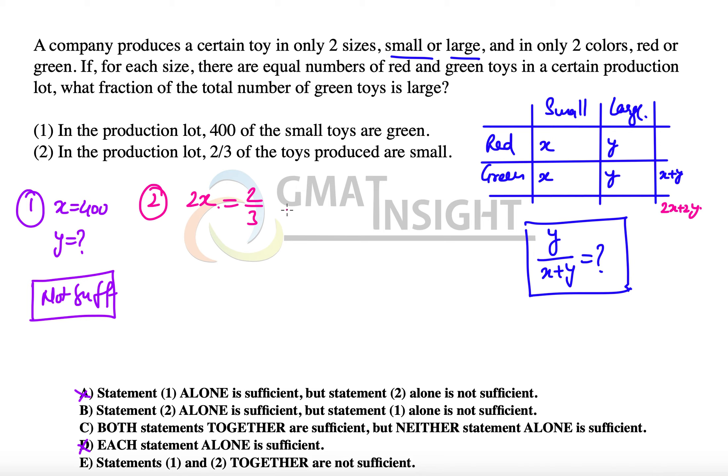So we can quickly write here two-thirds of 2x plus 2y. So that becomes x is equal to two-thirds of x plus y. Now if x is two-thirds of x plus y, then y must be the remaining one-third of x plus y.